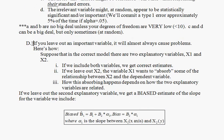this is really the big sin. If you leave out a variable that is important, it will almost always cause a problem. Suppose that in the correct model there are two explanatory variables, just to keep things simple. Let's call them X1 and X2 in the correct model. If you include both models, the estimates you get will be correct.